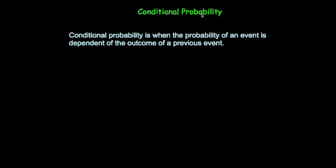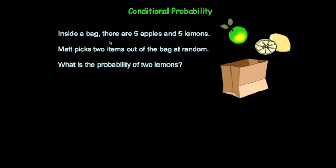Today we're going to look at conditional probability. Conditional probability is when the probability of an event is dependent on the outcome of a previous event. So let's have a look at a typical scenario: if you had a bag with five apples and five lemons and you were to take two items out of the bag at random, as you take the first piece of fruit out, the probabilities are going to change for the second piece.